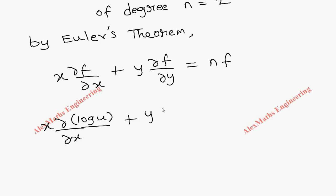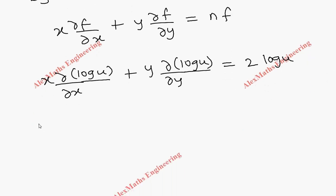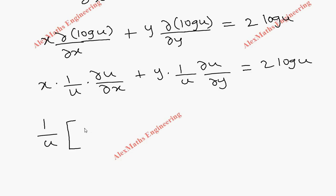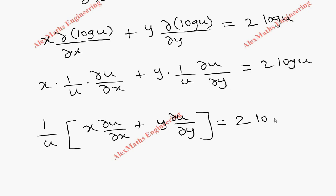Applying the chain rule, the derivative of log u with respect to x is (1/u)·∂u/∂x, and similarly for y it is (1/u)·∂u/∂y. So we have x·(1/u)·∂u/∂x + y·(1/u)·∂u/∂y = 2·log u. From this, taking (1/u) common, we are left with x·∂u/∂x + y·∂u/∂y = 2u·log u.